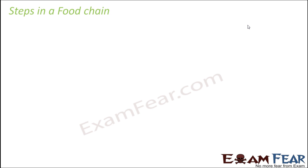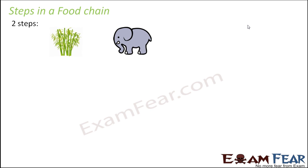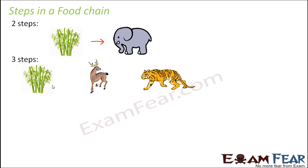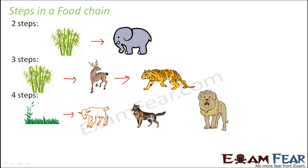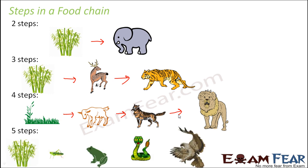The minimum number of steps in a food chain has to be two, otherwise you are not forming a chain. A two-step food chain could be plants eaten by elephants if the elephant is not eaten by anyone else. A three-step chain: plants eaten by deer, deer eaten by tiger. A four-step chain: plants eaten by goat, goat eaten by fox, fox eaten by lion. A five-step chain: plants, grasshopper, frog, snake, hawk.